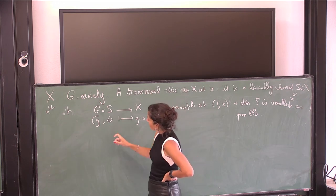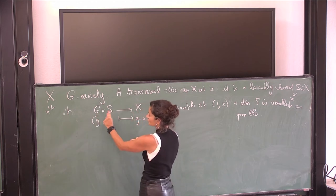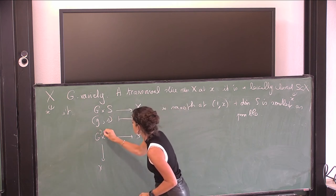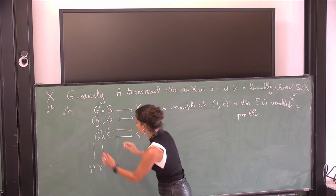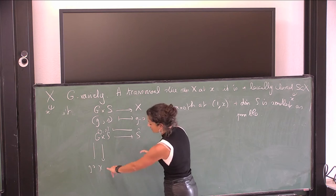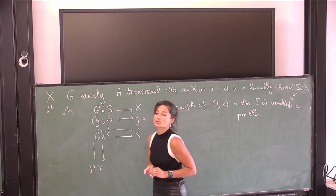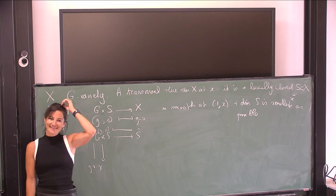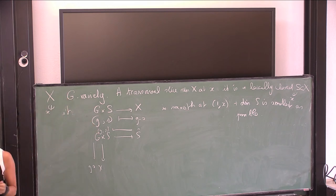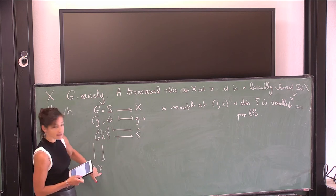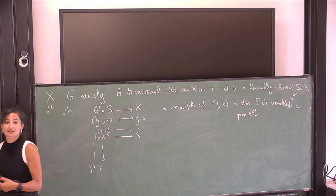In this context, you have a variety here exactly G × S, and these two morphisms are smooth at (1, x). Then we say that the singularity at x in X is the same as the singularity at S in x — up to smooth equivalence. Smooth means smooth morphism, essentially a submersion: the differential is surjective.